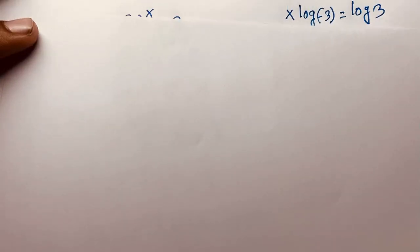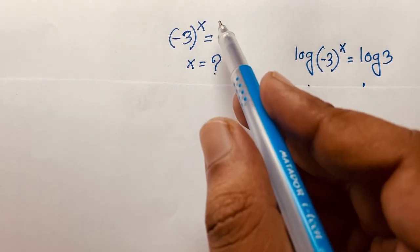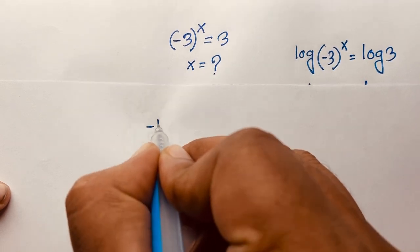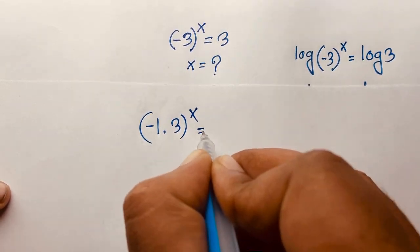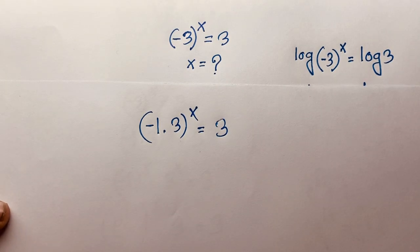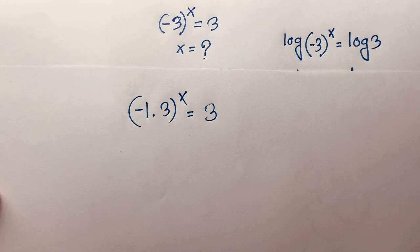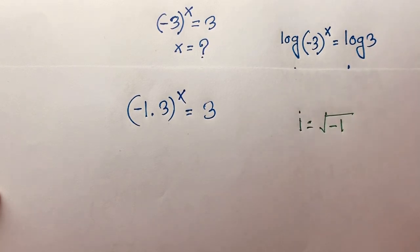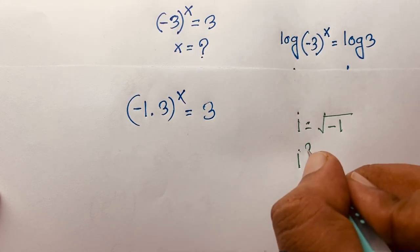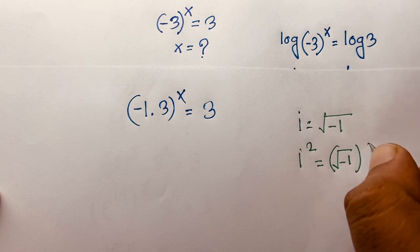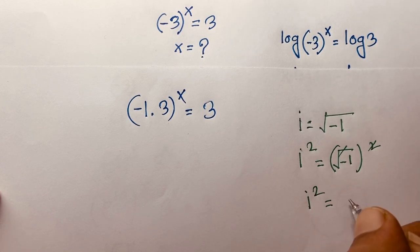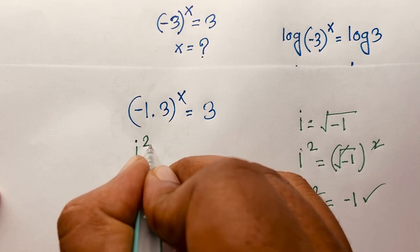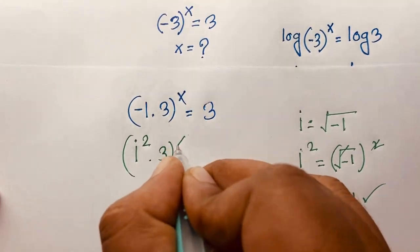Now I'll solve this using another method. Our question is: minus 3 to the power of x is equal to 3. We write minus 3 as minus 1 times 3 to the power of x, equals 3. Now, using the fact that i is a complex imaginary number where i equals the square root of minus 1, squaring both sides gives i squared equals minus 1. So negative 1 equals i squared, and we can write: i squared times 3, to the power of x, is equal to 3.